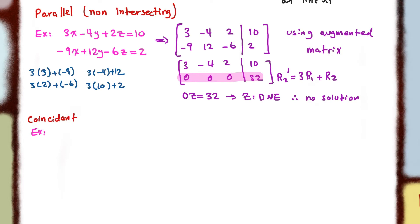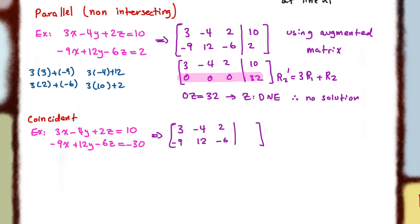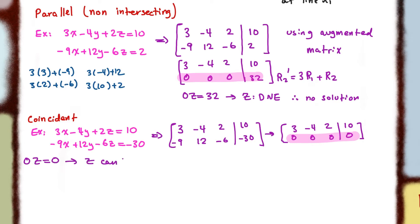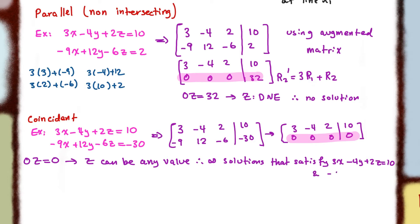We can also have the two planes being coincident, meaning that they lie on top of each other, and therefore they have an infinite number of intersecting points. Here is an example. If we use an augmented matrix and apply a row operation, we get zero, zero, zero, zero. If you try to solve this, you get zero times Z equal to zero, meaning Z can be any value, giving infinite solutions. You can also check using normals — the normals will be parallel — and verify that they share an infinite number of points, confirming the two planes are coincident.